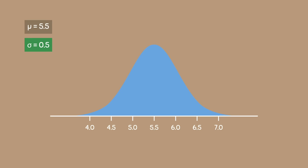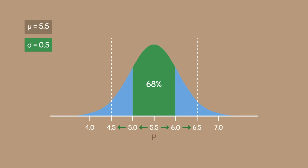The 68-95-99.7 rule states that within one standard deviation away from the mean, it contains a total area of 0.68 or 68%. Because of this, we can say that 68% of the population are between 5 and 6 feet tall. And if you go two standard deviations away from the mean, it contains an area of 95%, meaning 95% of the people in the population have a height between 4.5 and 6.5 feet.